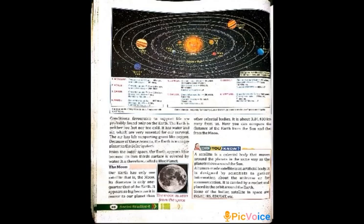Because the Earth is neither too hot nor too cold, has water and air essential for survival, and the air has life-supporting gases like oxygen, the Earth is known as the unique planet. It is the only planet in the solar system where life is known to exist, because Earth has all the favourable conditions required for the existence of life, including suitable seasons, weather conditions, optimum distance from the sun, availability of water and life-supporting gases like oxygen.